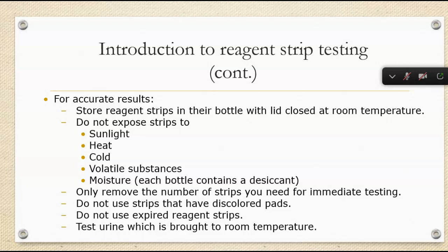For this to be accurate, reagent strips have to be stored in their bottle with the lid closed tightly at room temperature. We can't expose them to sunlight, heat, cold, volatile substances, or moisture. Each bottle will have a desiccant pack. You always need to check the strips to see if there's any discolored pads or they look brown, because that typically means they've been exposed to something and are no longer valid.